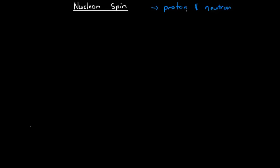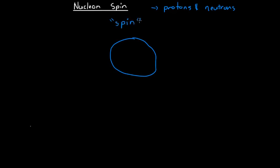If we have one nucleon, this nucleon will always have this intrinsic property that we call spin. Every nucleon in every nucleus has this concept of spin. This spin is a magnetic phenomenon, but it's very hard to visualize and conceptualize. We describe and visualize it as the idea of this nucleon spinning — as if we were to draw an axis through it and the nucleon was spinning around like that. The fact is that every nucleon has this property that we happen to refer to as spin.